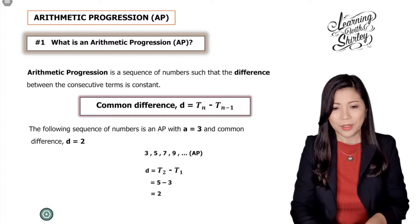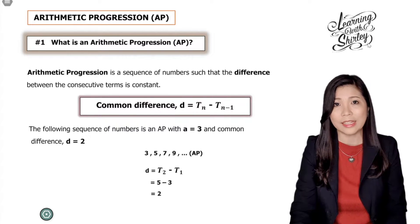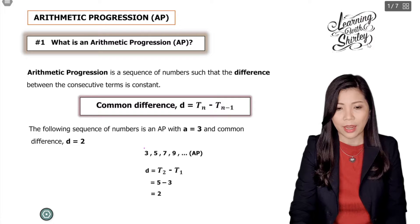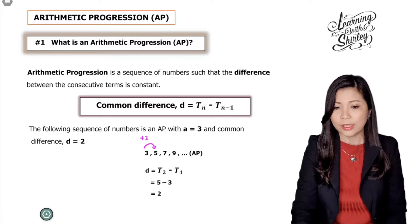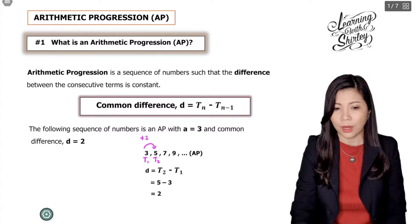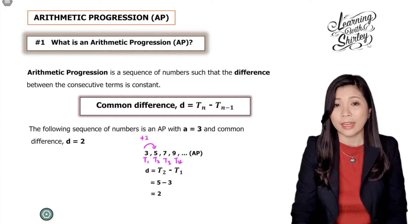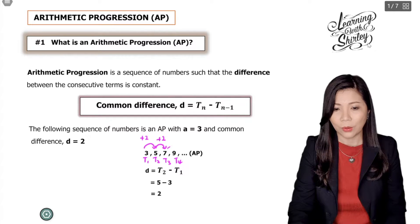So the formula to find common difference is d equals to tn minus tn minus 1. For this example, 3, 5, 7, 9 which is an AP, to get to the next term we plus 2. To get 2, we use t2 minus t1. So t2 minus t1 gives us 2. To get from the second term to the third term, we add another 2 and so on. So this is an AP.